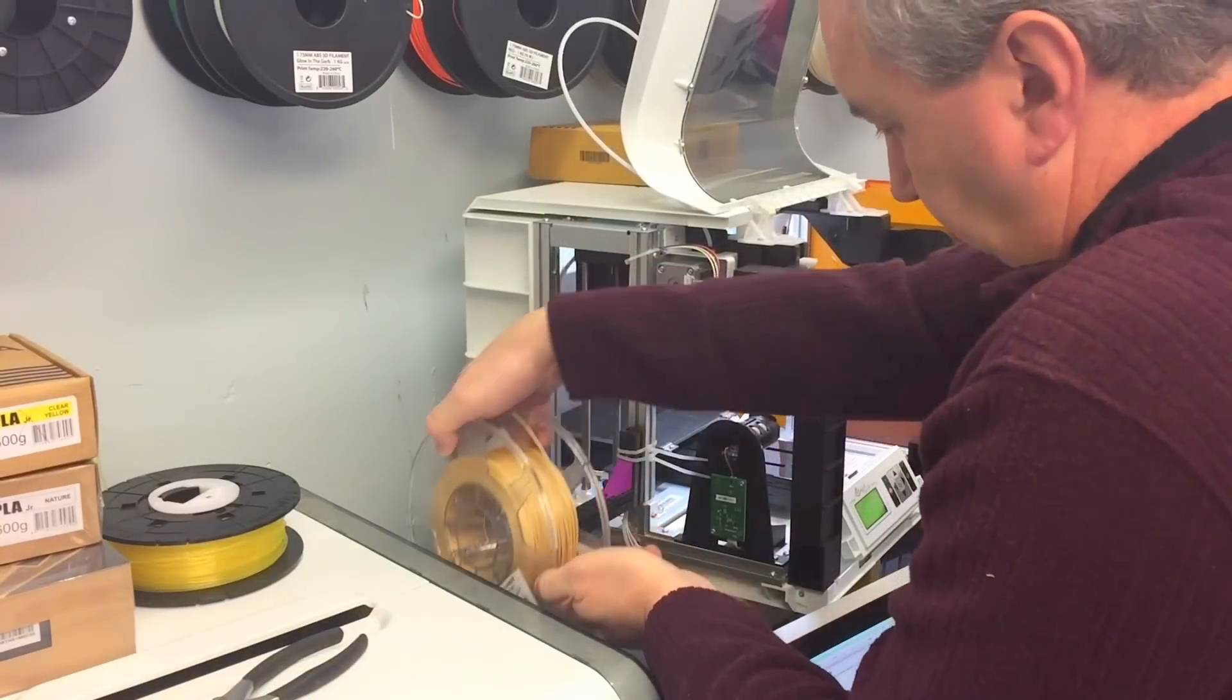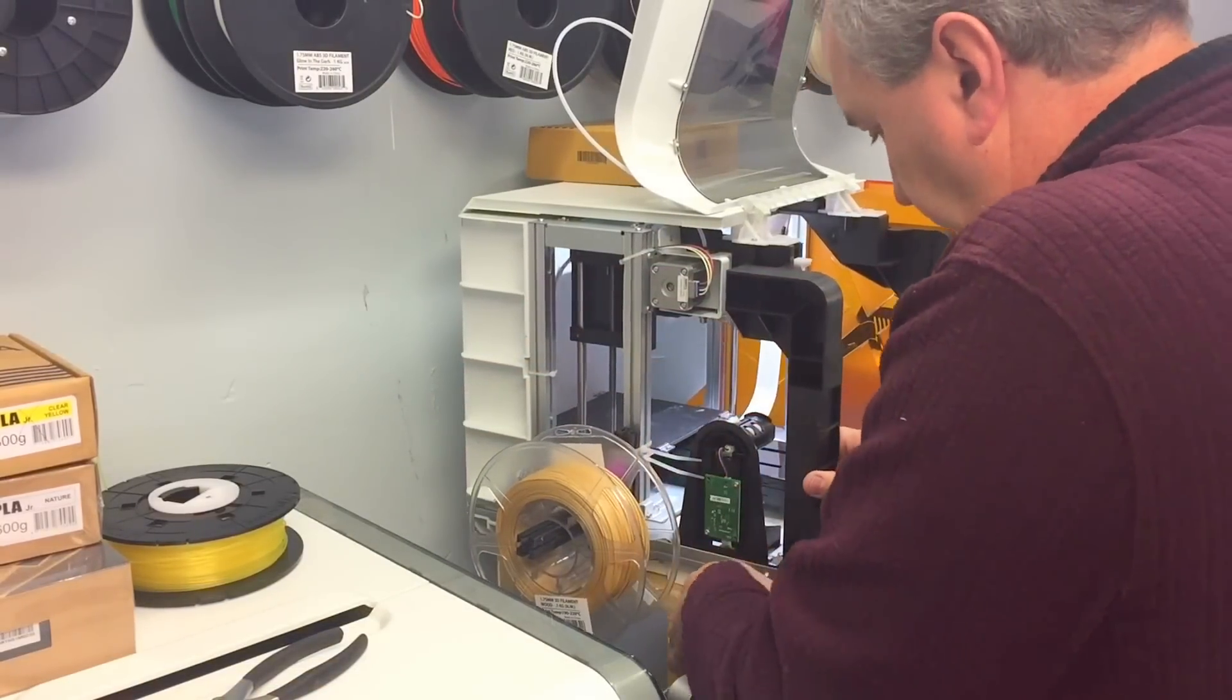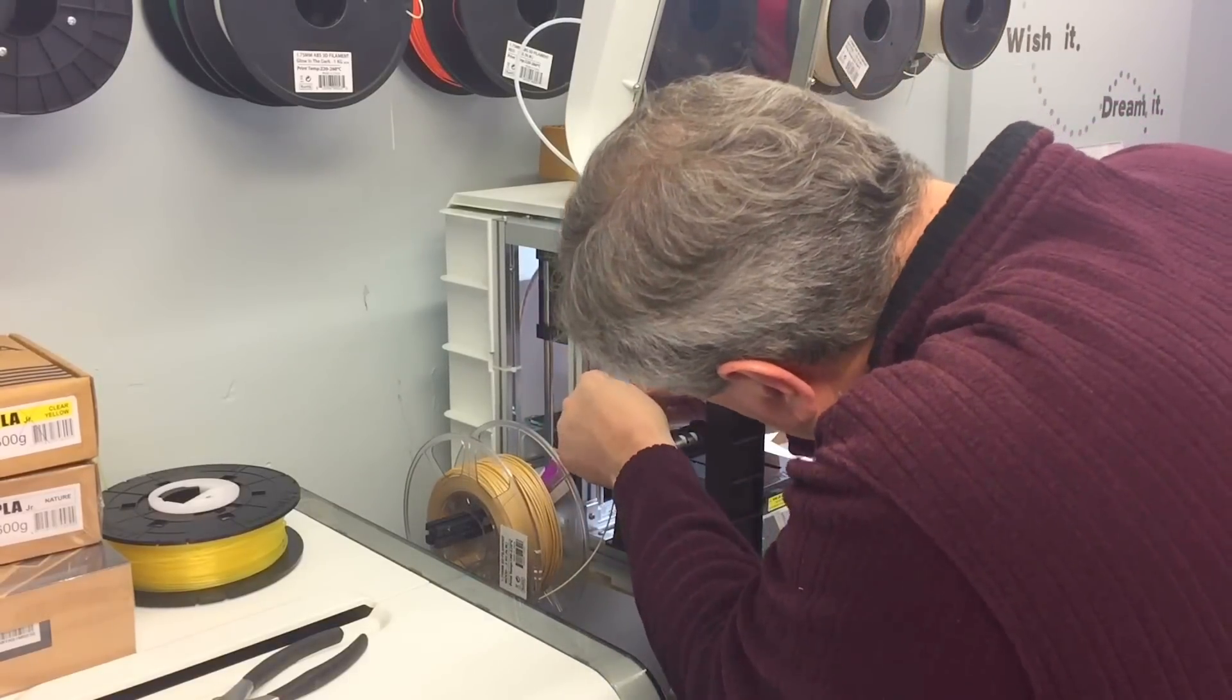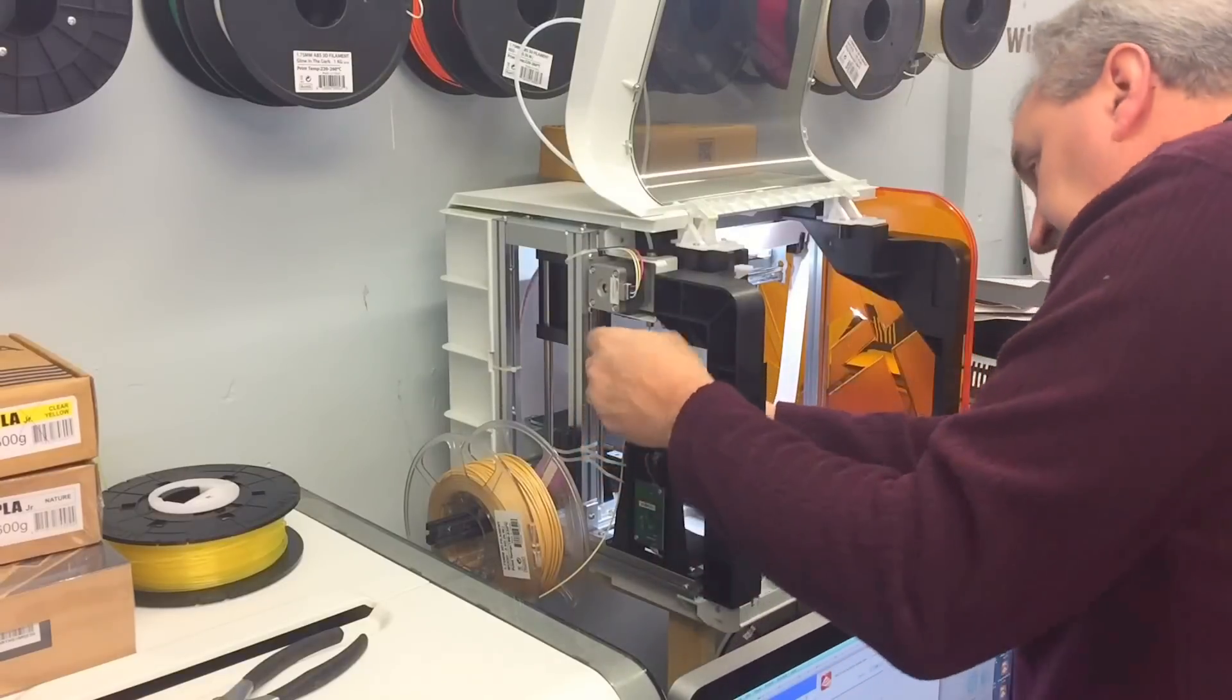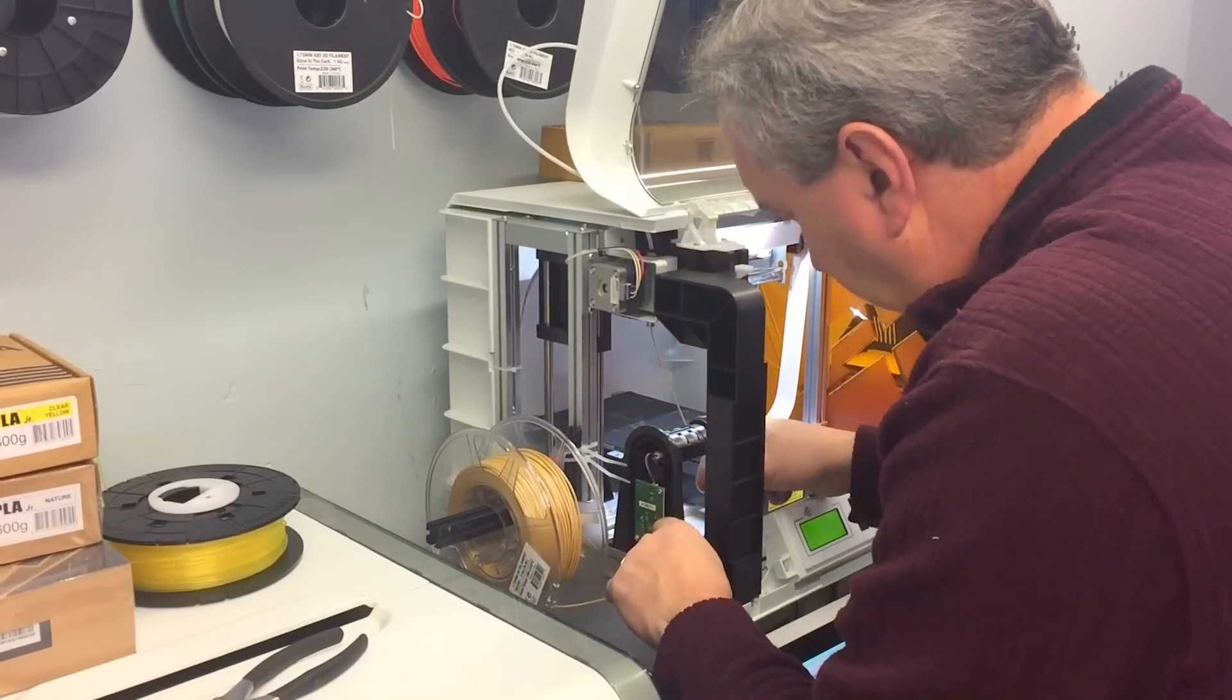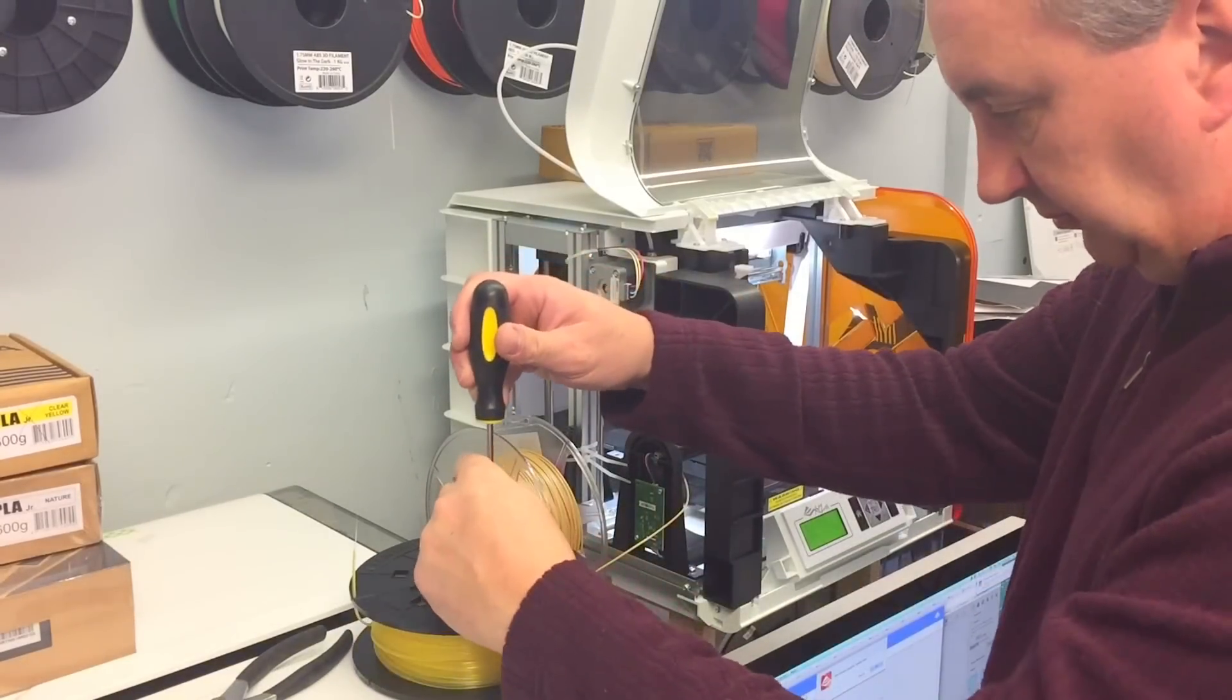If you're wondering why I'm doing all this, instead of just inserting the spool inside the DaVinci Junior, it's because it doesn't fit. The DaVinci Junior spools are a lot smaller, and there's just no space for anything bigger. So I just fed it up through the extruder, through the Bowden tube, and down to the hot end, and then wrapped it around where the filament's supposed to go.